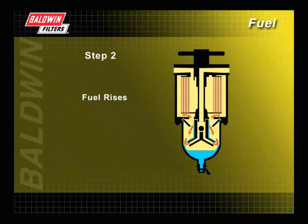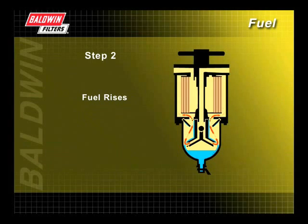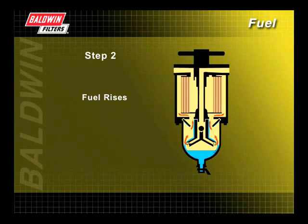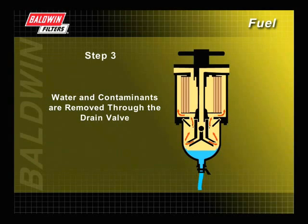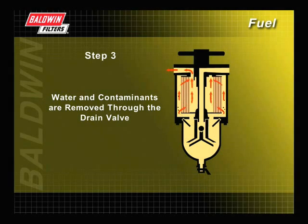The fuel then rises, coalescing water droplets on the cone and baffles. These droplets are heavier than the fuel itself and fall to the bottom of the bowl. The water and contaminants can then be removed through the drain valve. The fuel then flows through a filter, where additional smaller contaminants are removed.